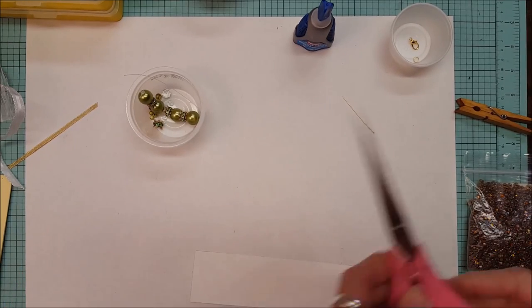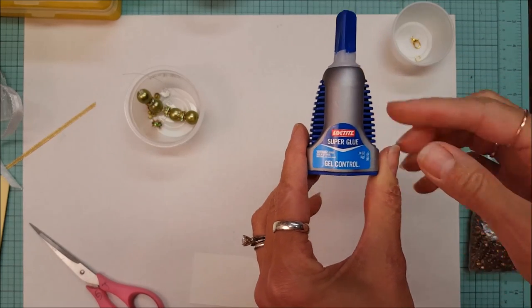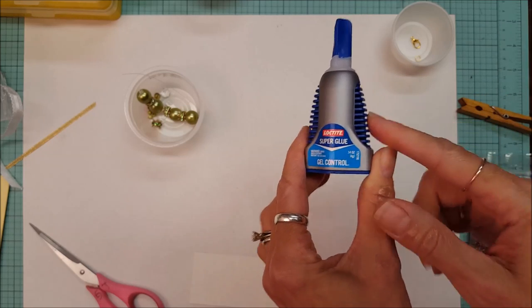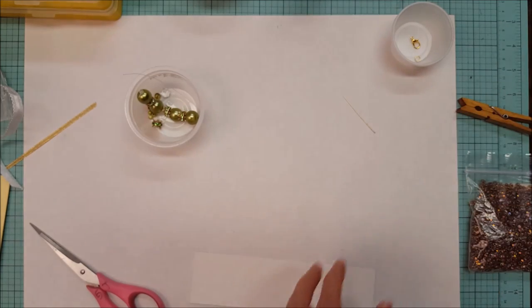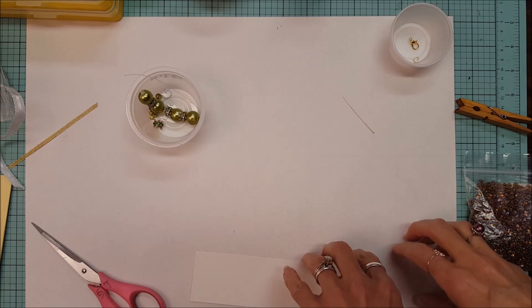You need sharp, pointy scissors. You need some glue. I'm using two. I'm using the Loctite Super Glue because it dries quickly and it's a permanent hold, but I'm also using hot glue because I need to be able to work fairly quickly.